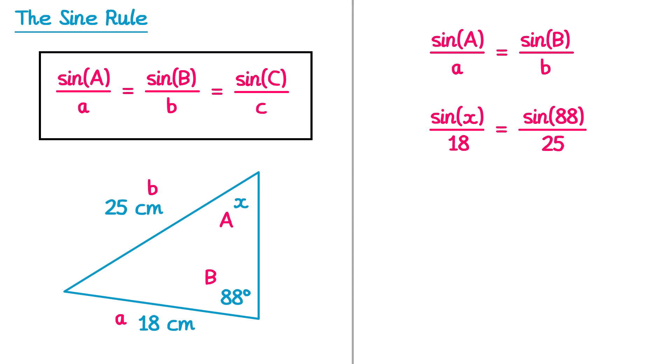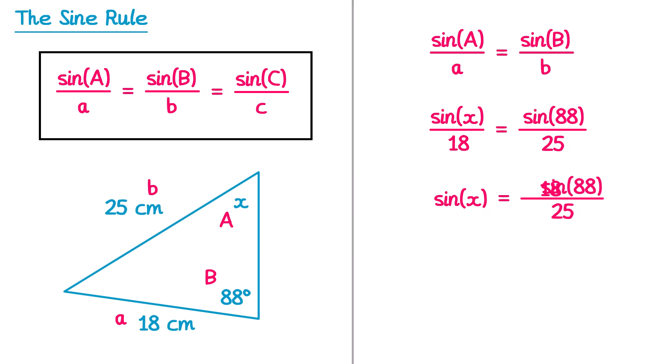We multiply both sides by 18. This cancels on the left, leaving sine of x. On the right we have sine 88 over 25 multiplied by 18, written as 18 sine 88 over 25. Typing the right side into a calculator gives a decimal value. The left side is still sine of x — not x itself — so that decimal is the value of sine of x, not x.